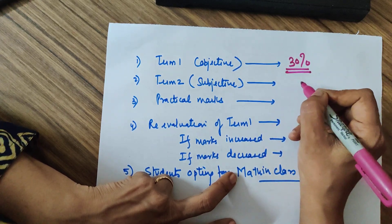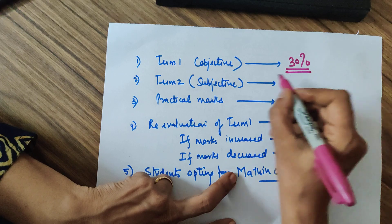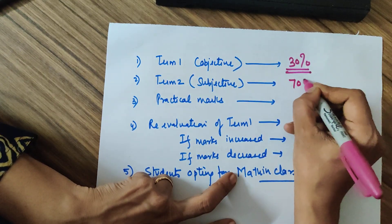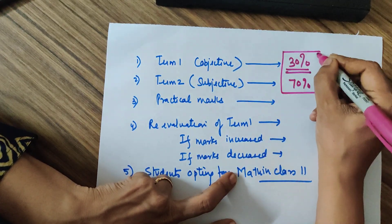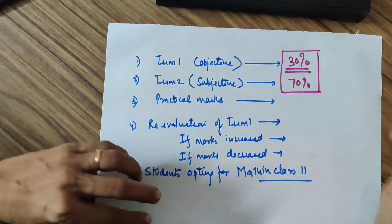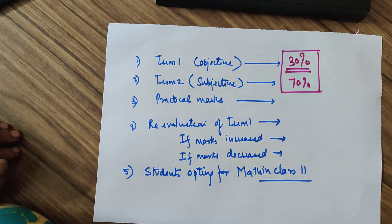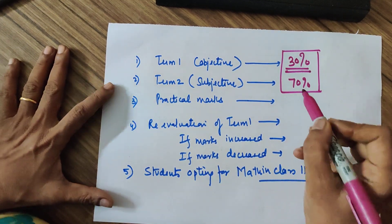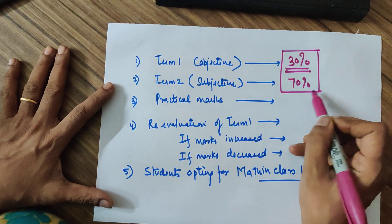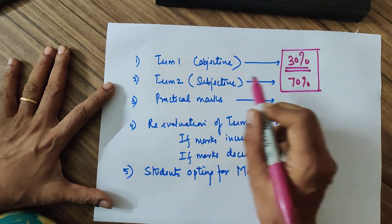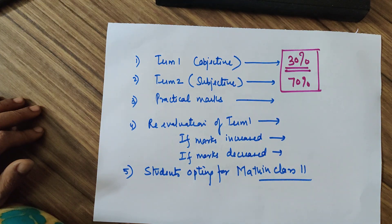So your score that you have got, job ka result ab aaya hai, wo Term 2 ke basis pe hai jiski weightage 70% hai. This is important information for each one of you. Iska matlab jo result aaya hai uska 70% credit is for the board exam jo aap ne diya tha.